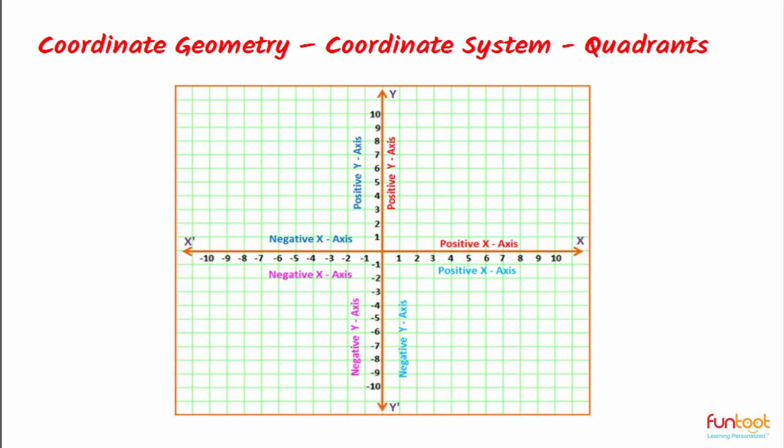In this video, let's discuss the quadrants of coordinate system. The X axis and Y axis divide the Cartesian plane into four quarters. We can see that these are the four quarters, and each quarter is called a quadrant.